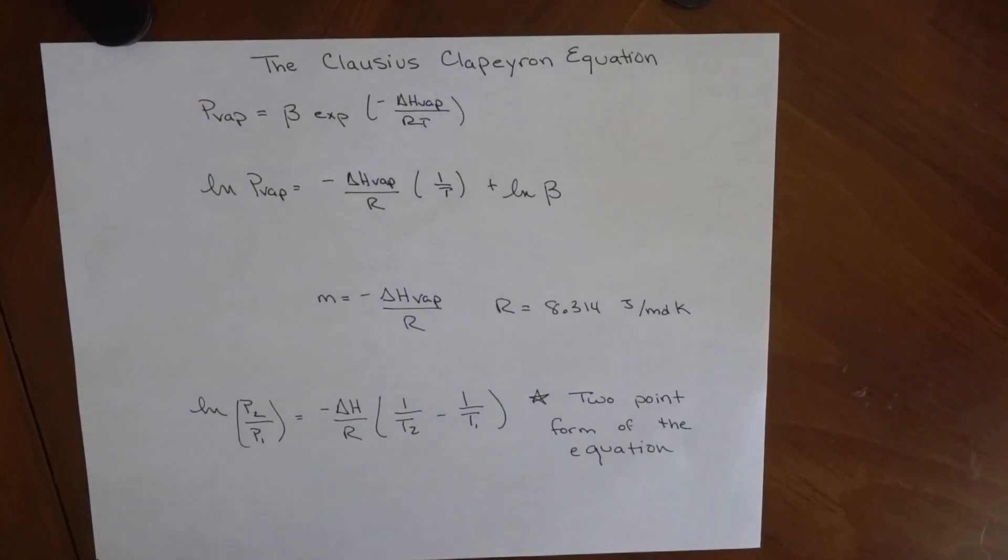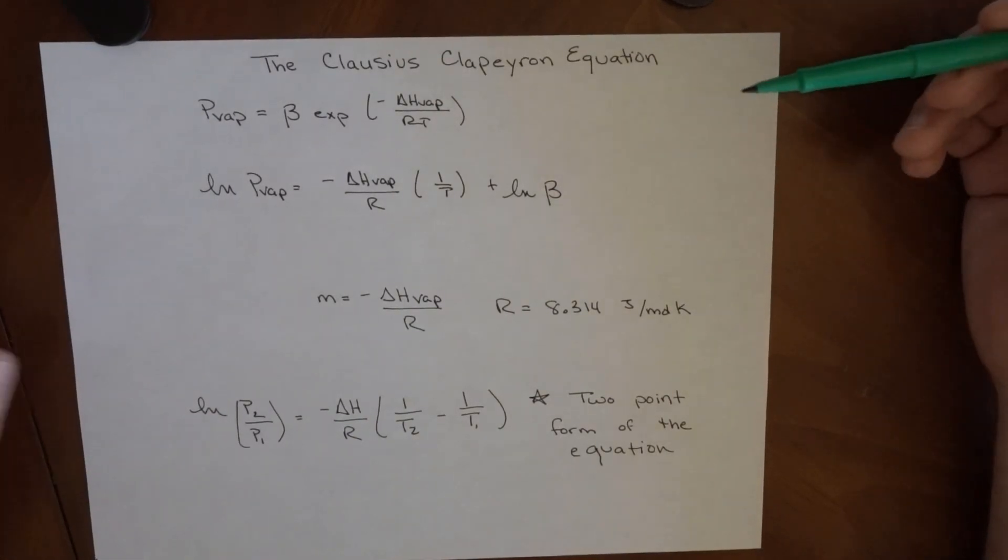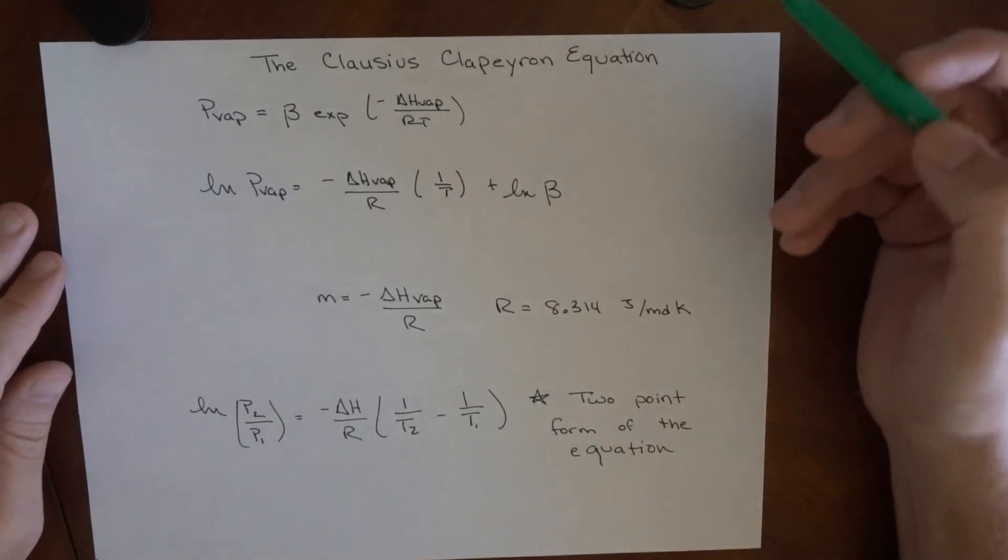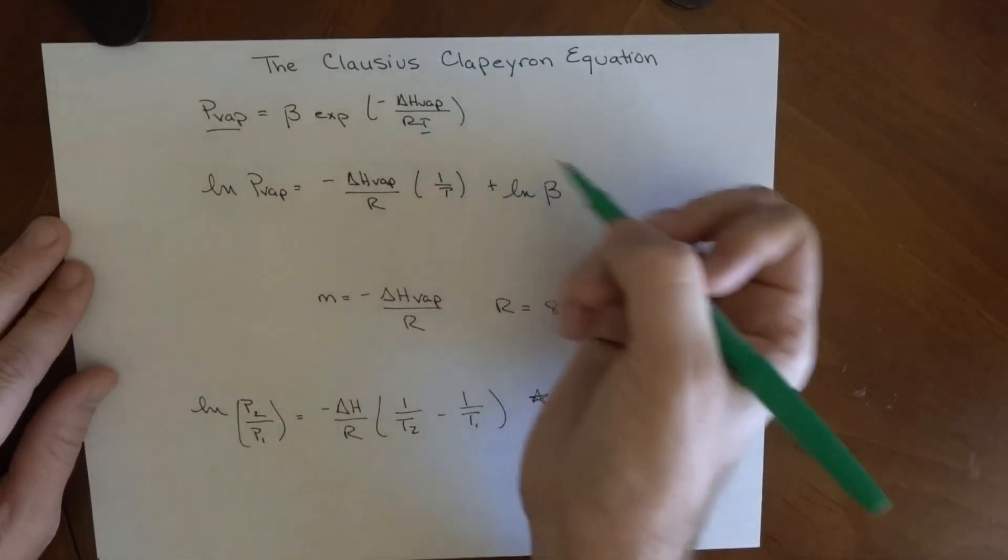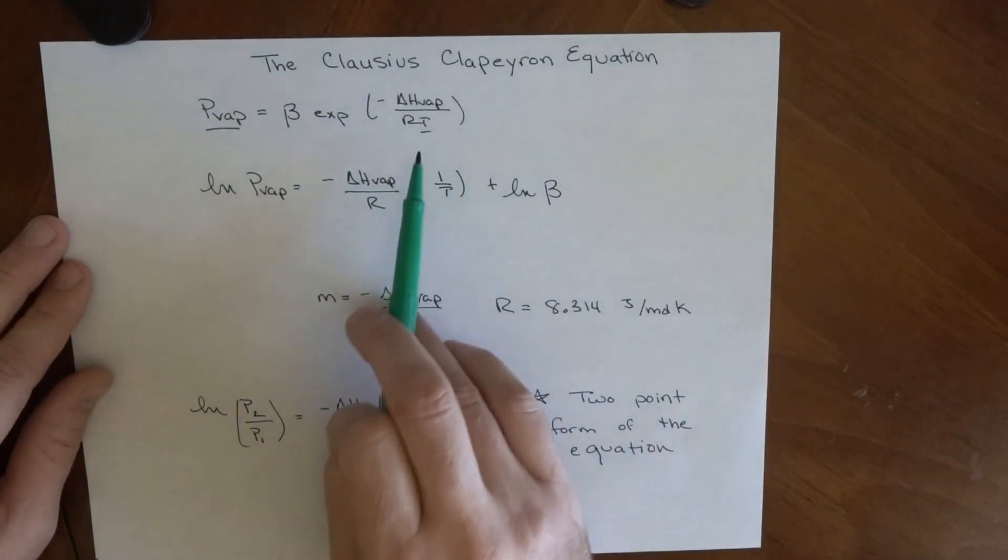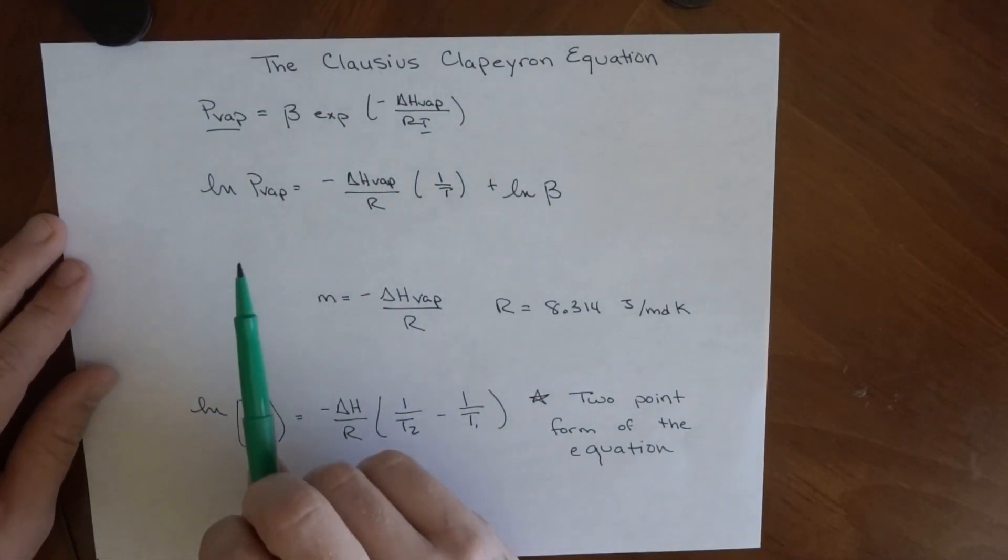We're going to go over the Clausius-Clapeyron equation. We've already covered what makes it important, but now how to work with it. The expression that relates the vapor pressure of a liquid and its temperature is this. It's a complicated equation, and we notice that it's not linear. So usually what we try to do is put things into a linear fashion.